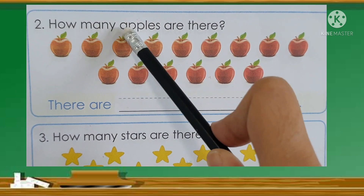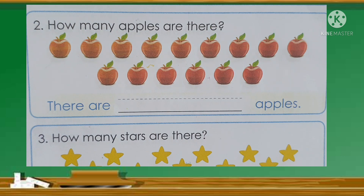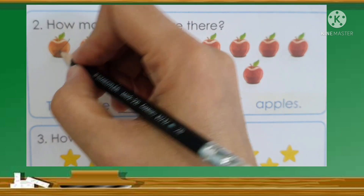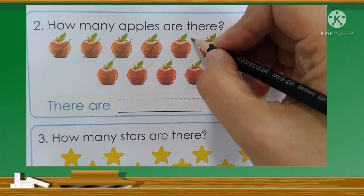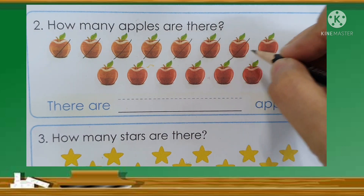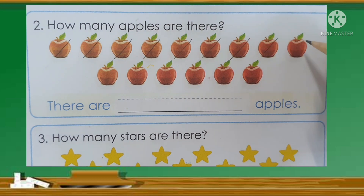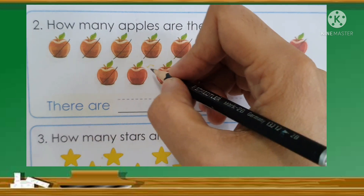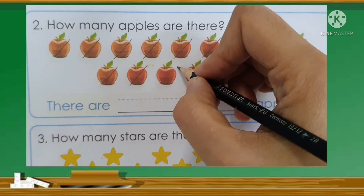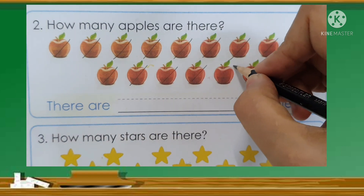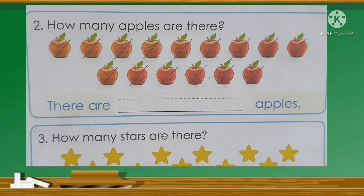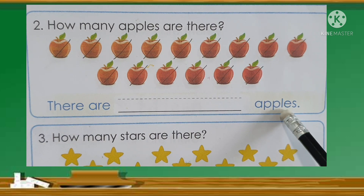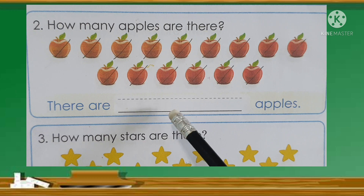Question number 2: How many apples are there? Now let's count how many apples. 1, 2, 3, 4, 5, 6, 7, 8, 9, 10, 11, 12, 13, 14, 15. So there are 15 apples. Now we will write the word 15.